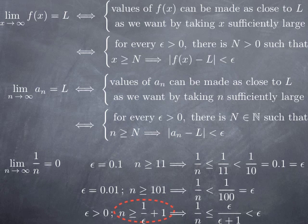For capital N, we want a positive integer. The value 1/epsilon + 1 may or may not be a positive integer, so we can take for capital N the first positive integer greater than 1/epsilon + 1. Then whenever little n is greater than that capital N, it is also greater than 1/epsilon + 1, and the condition is satisfied.